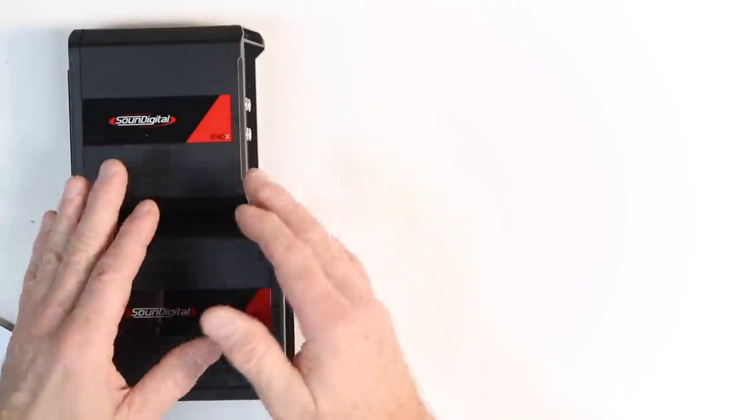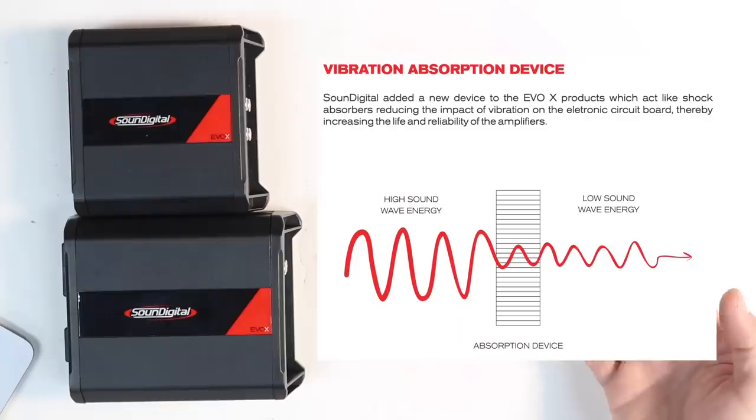One of the new features built into the Evo X is the vibration absorption device. They added a new device which acts like a shock absorber reducing the impact of vibration on the electronic circuit board thereby increasing the life and reliability of the amplifier.